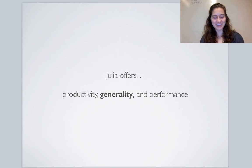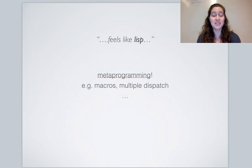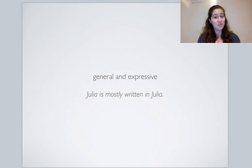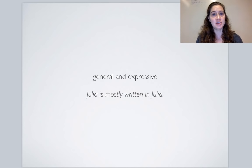The third thing Julia offers is generality — this is what we mean when we say working in Julia feels like a Lisp. Julia offers metaprogramming facilities, macros, and its design paradigm is multiple dispatch. The language is dynamic, parametric, and homoiconic. Julia is so general and expressive that it's mostly written in Julia itself. This blurs the line between users and developers — many important contributors came to the language as users without formal CS training and found they could look under the hood and make changes to the base language.